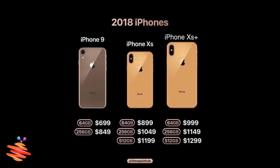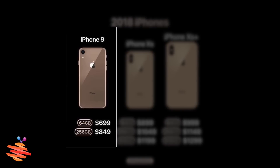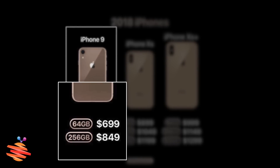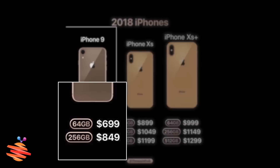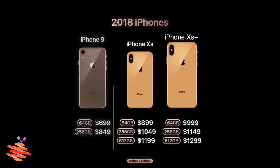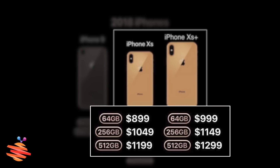In the case of iPhone 9, we have a 6.1-inch LCD display, which is a 6.1-inch LCD display. The memory is 64GB and 256GB. The OLED model has 64GB, 256GB.